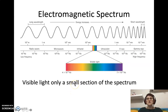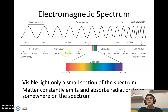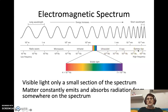On either side of visible light are sections you're familiar with. Visible light is only a small section of the spectrum. Matter is constantly emitting and absorbing radiation from somewhere on the spectrum. Most objects emit in the infrared because infrared is heat. We can also absorb in the ultraviolet, x-rays, and gamma rays — these are generally not good for us as they are very high energy. Lower frequency radiation is less dangerous because it carries lower energy.